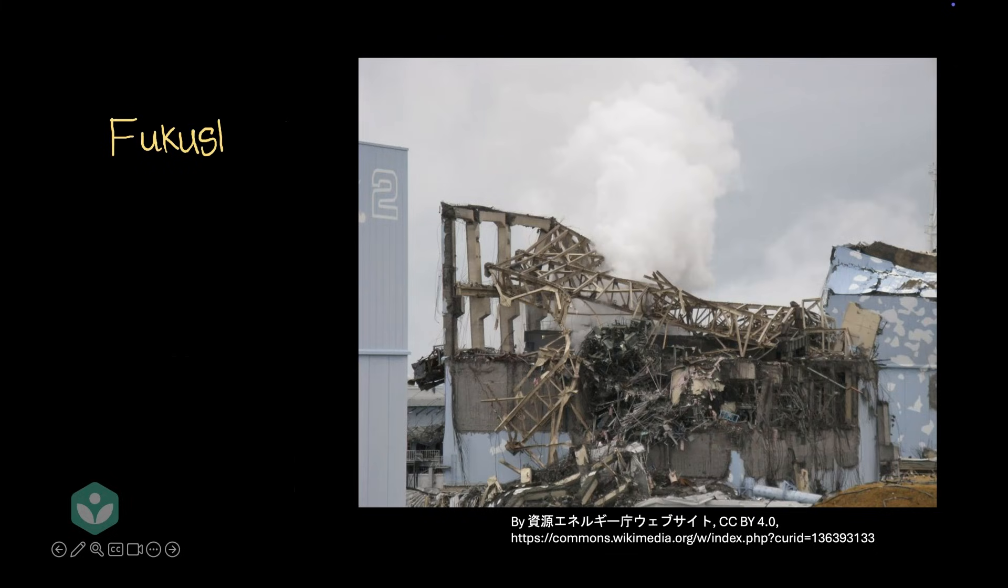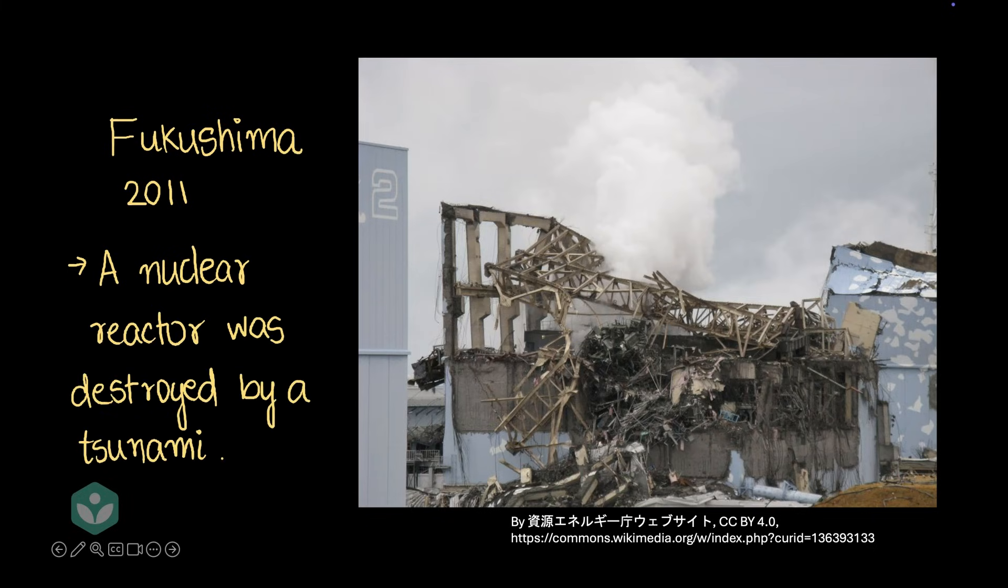A nuclear power plant was destroyed by a tsunami. A nuclear power plant has very dangerous chemicals which can harm people even 30-40 kilometers away from the power plant if the power plant is destroyed.